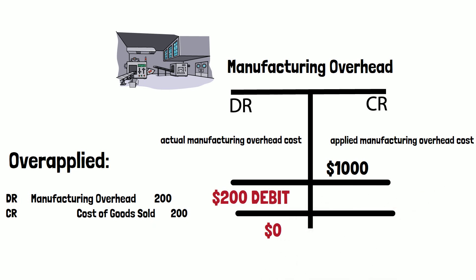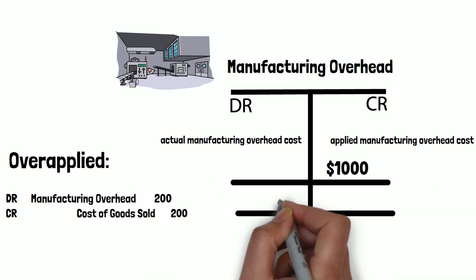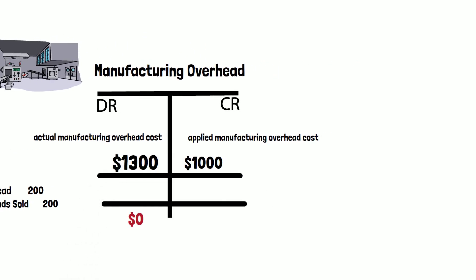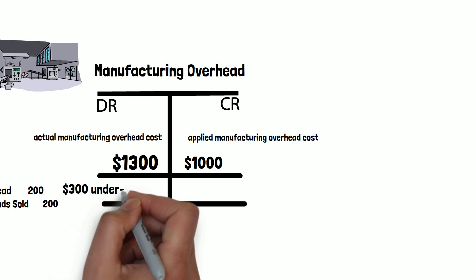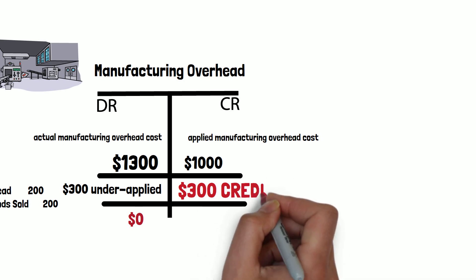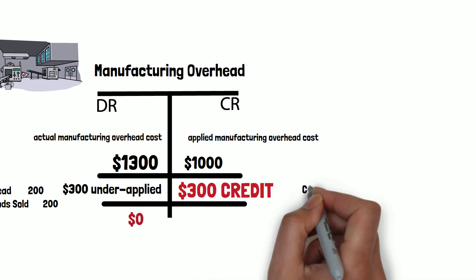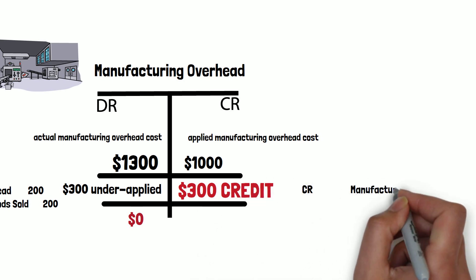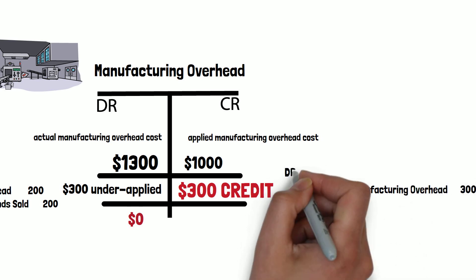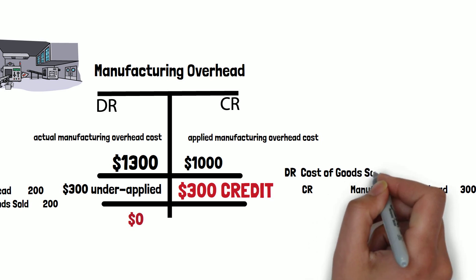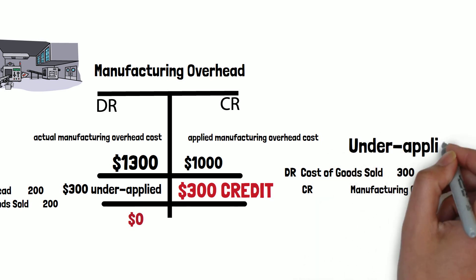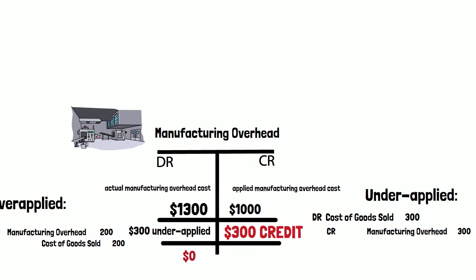Now let's take a look at another situation. Suppose the actual manufacturing overhead cost is thirteen hundred dollars — this gives us a three hundred dollar under-applied amount. To make the balance zero, we have to credit three hundred dollars to manufacturing overhead and debit cost of goods sold for three hundred dollars. This is the under-applied situation.